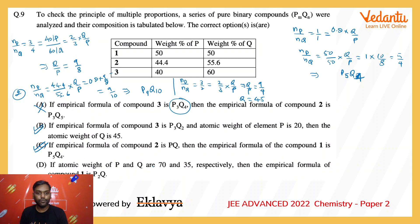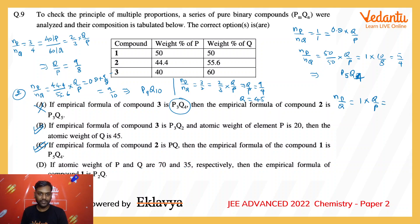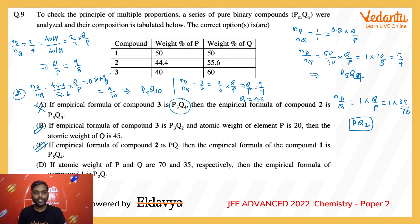Option D: if the atomic weights of P and Q are 70 and 35 respectively, then the empirical formula of compound 1 is P₂Q. For compound 1, Np/Nq equals (50/70) ÷ (50/35) = Q/P = 35/70 = 1/2. So the formula would be PQ₂, not P₂Q. This option is wrong. Therefore, the correct answer for this question is B and C.